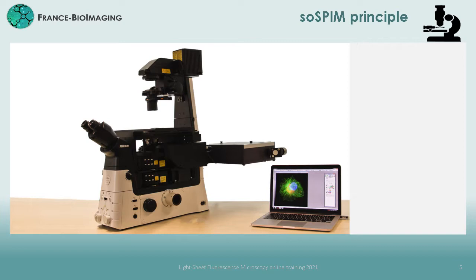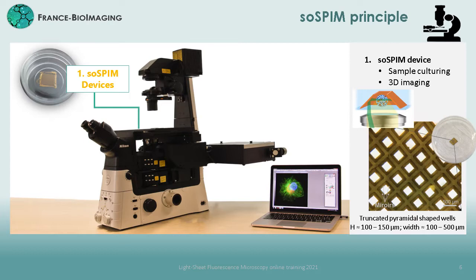A SOSPIN system looks like this. It is compatible with any inverted microscope, and therefore benefits from their standard imaging modalities, such as epifluorescence or phase contrast imaging, and it is composed of three main components. The first is microfabricated devices that integrate the 45-degree mirror, allowing to create the excitation light sheet. They are positioned as any standard petri dish on an inverted microscope and allow for 3D sample culture. We developed several designs adapted to different kinds of samples, from single cells to spheroids or organoids.